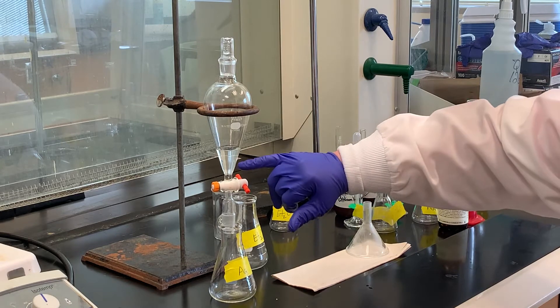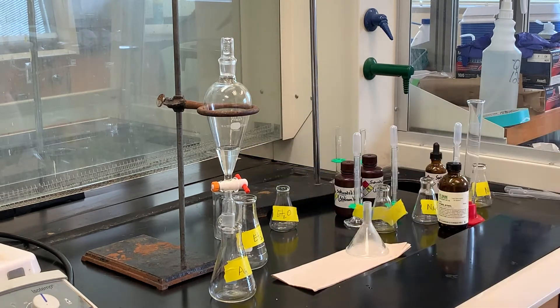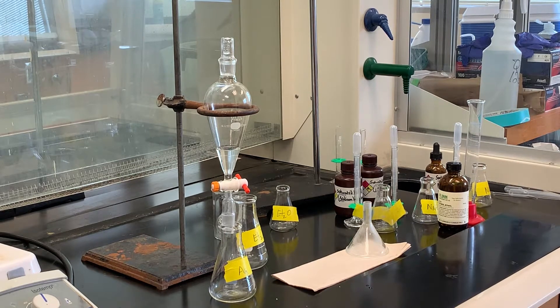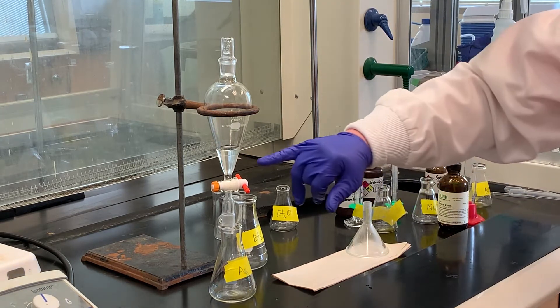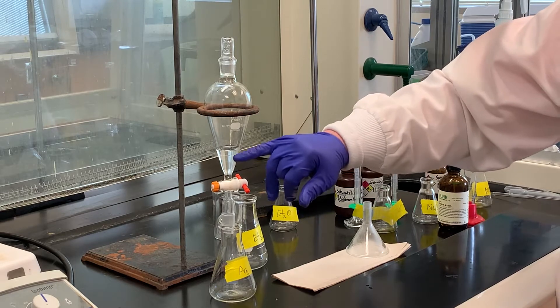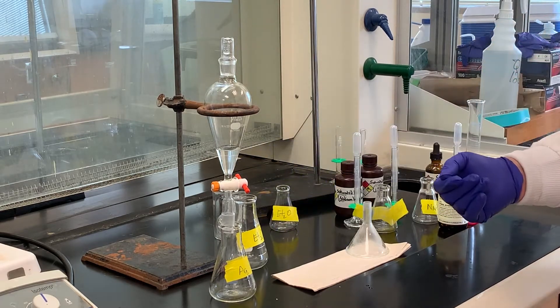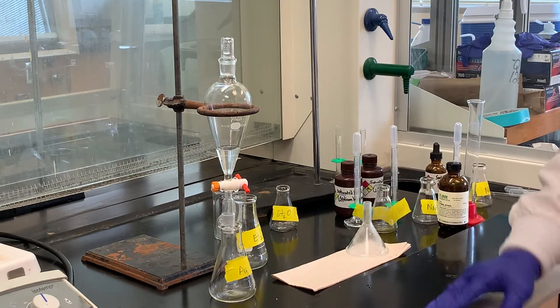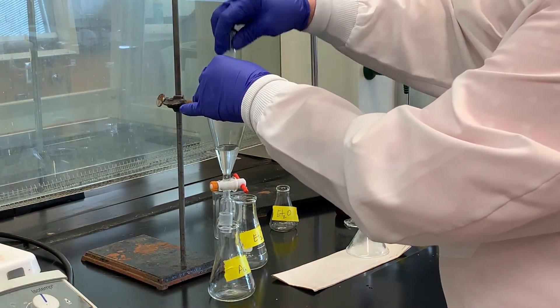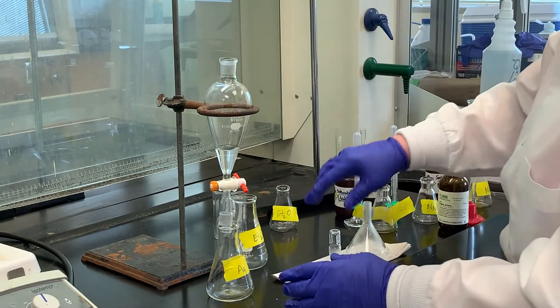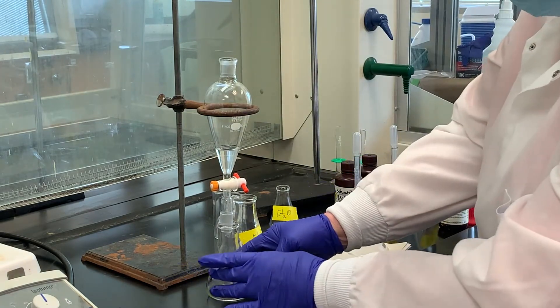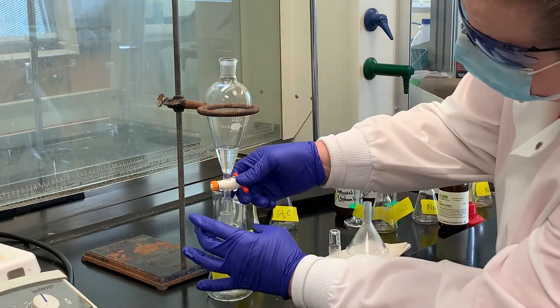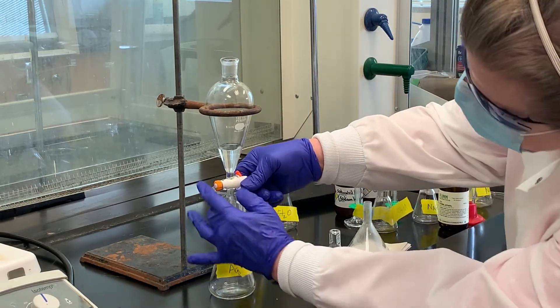So what I'm going to do is drain off that bottom layer, which is the aqueous. And I want to save that because I'm going to wash it again with another five mils of ether, just in case if there's anything organic in that aqueous layer we can pull that out with another washing. So it looks like the layers have separated pretty good. So I'm going to remove the stopcock. Here's my aqueous flask. It's always a good idea to label these as you need them.